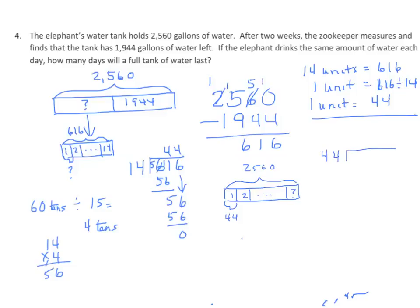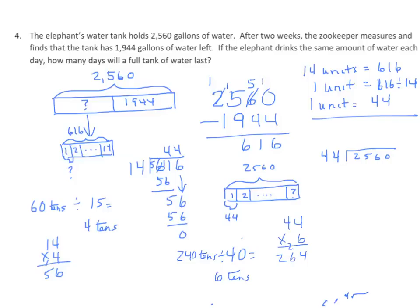Let's set up the problem. 44 rounds to 40, and I have 256 tens. I'm going to say 240 tens, which would equal 6 tens. But let me check by multiplying before I record my quotient: 44 times 6. I get a 4, regroup the 2, I have 24, plus 2 is 26, giving 264. That's too big because 264 is greater than my 256 tens, so I need to adjust. I'm going to record my 5 in the tens place for my quotient.